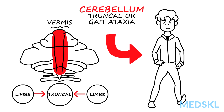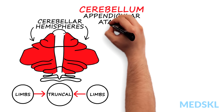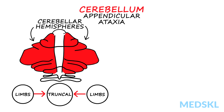Patients have a wide base gait and appear drunk. Lesions affecting the cerebellar hemispheres result in problems with voluntary limb movements. This is referred to as appendicular ataxia. Finger-nose testing and rapid alternating movements allow observation of these difficulties.